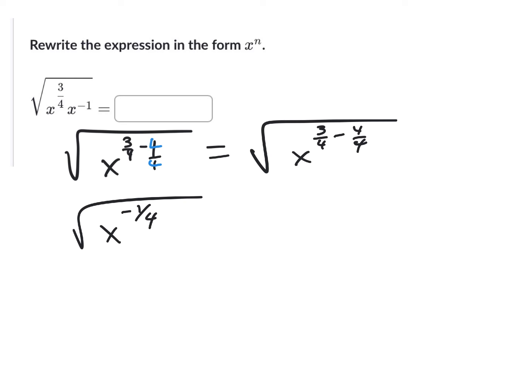Okay, now, what can we do here? This gets a little bit funky. They want us to write it all in exponent form. Remember, when there's a square root without, or a radical symbol without a number in the, the correct term is index, but I like to call it in the crack, right? It's a two. So that number is a two.